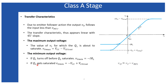If Q2 saturates before Q1 turns off, the minimum output voltage is the saturation voltage of Q2. We must avoid this condition because when Q2 saturates it can no longer deliver the constant current I, and cannot provide proper biasing for the Class A amplifier. Q2 is used to provide the bias current while Q1 acts as the main amplifier in the emitter follower. We must design the amplifier carefully so Q2 does not saturate before Q1 turns off.